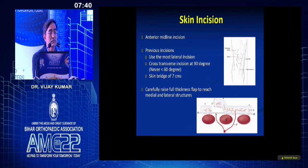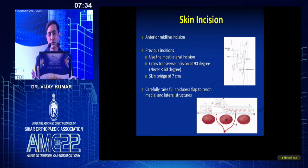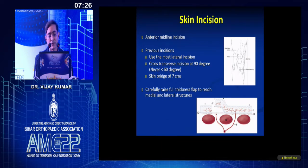The skin incision is a midline incision. If there is a previous scar, use the lateral-most incision because all the blood supply comes from the medial side. If there is a transverse incision, cross it at around 90 degrees, never less than 60 degrees. If making a new incision not using the previous one, there should be at least seven centimeters between the skin bridge.